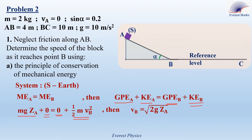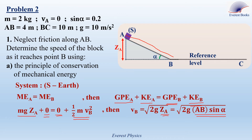This gives VB = √(2gZ_A). From the right-angle triangle in the figure, sin α = Z_A / AB, so Z_A = AB·sin α. Substituting: VB = √(2 × 10 × 4 × 0.2), which gives VB = 4 meters per second.